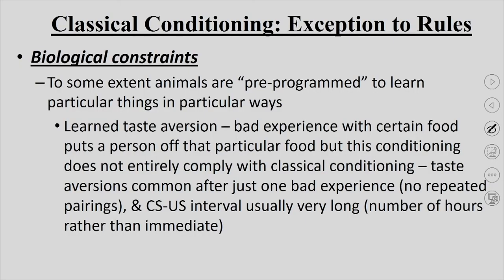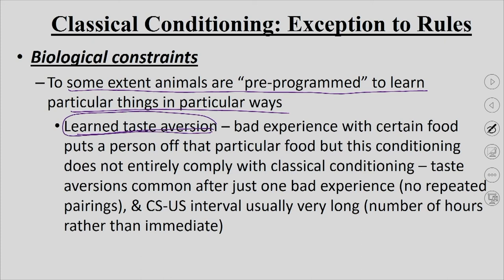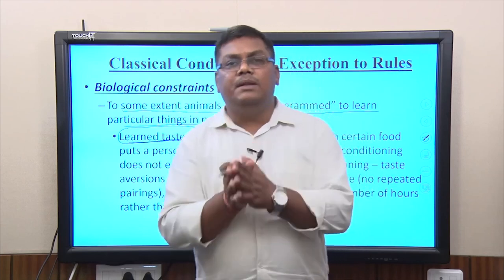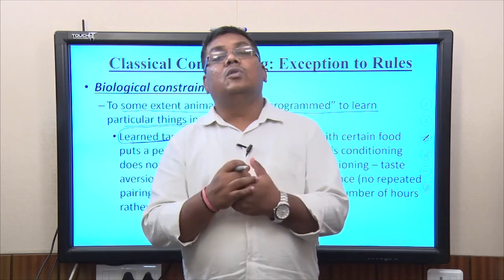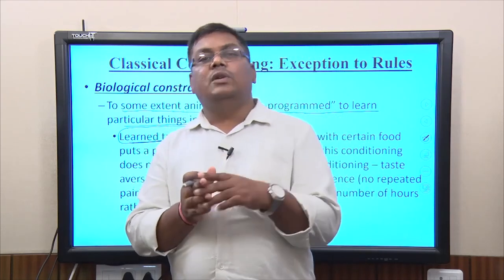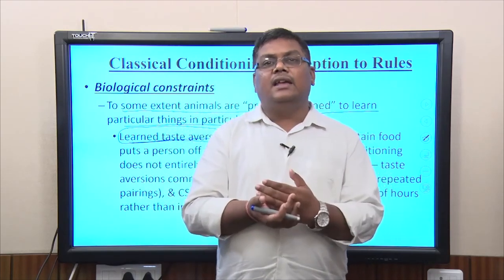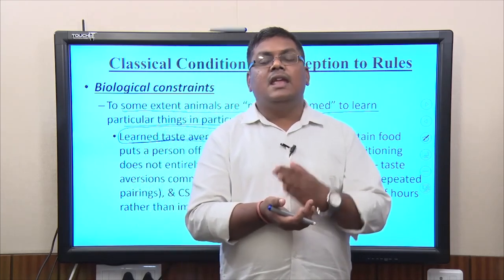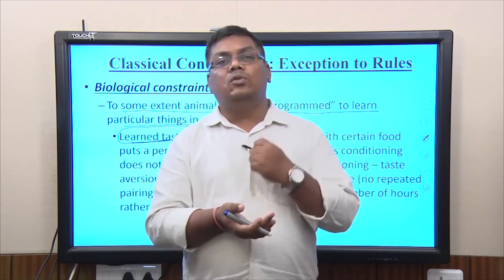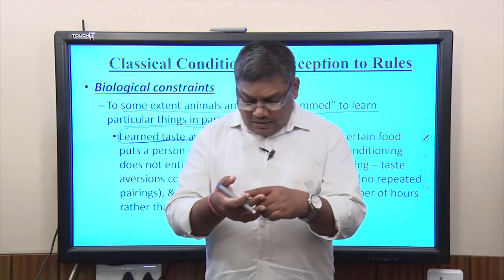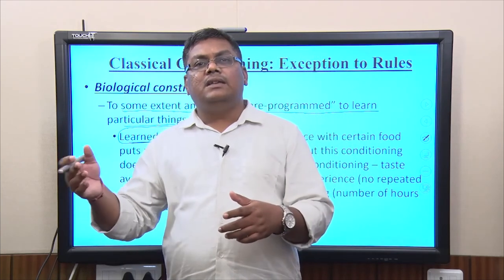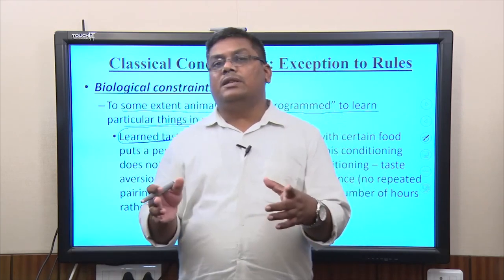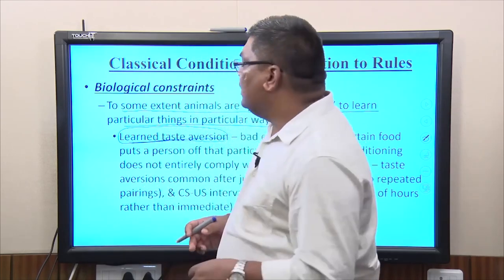There are certain biological constraints to classical conditioning — to some extent animals are pre-programmed to learn in particular ways. For example, if you go to a restaurant and get food poisoning, you will not go back. Disliking a restaurant takes just one experience, but liking it requires going again and again. Multiple pairings are required to like the restaurant, but disliking it is a one-trial process — that is called biological constraints.